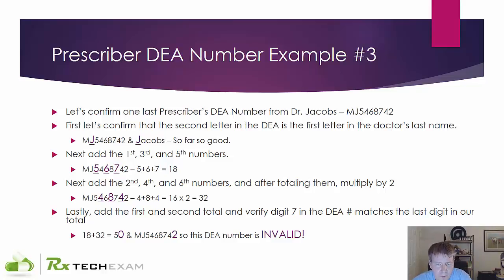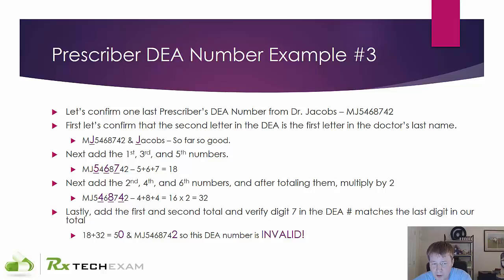Last one: Dr. Jacobs, MJ5468742. The J in Jacobs matches the second letter of the DEA — that's good. We're going to add the first, third, and fifth numbers: 5, 6, and 7, which adds to 18. Now we add the second, fourth, and sixth numbers: 4, 8, and 4, which adds to 16, and we multiply by 2 to get 32. 18 plus 32 gives us 50. The last digit in 50 is 0, but the last digit in our DEA number is 2 — so this number is proven invalid.